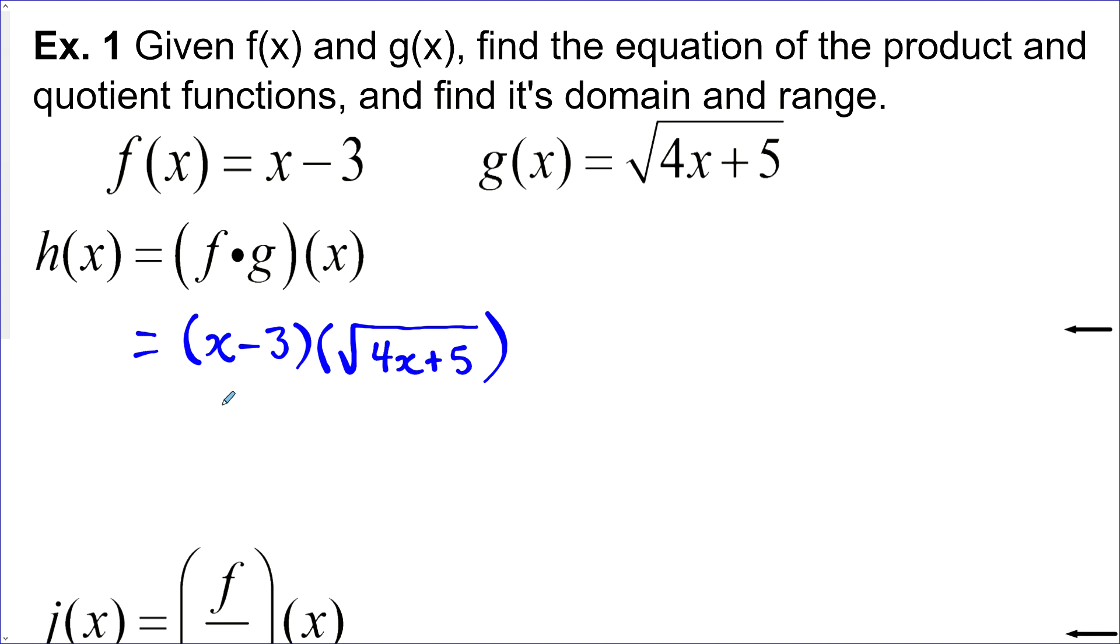Now we want to find the domain and range. So for the domain at least we look at this radical. We want our answer to be real and so we want this thing here, this radicand to be greater than or equal to zero. So do some algebra to solve for x. x is greater than or equal to negative 5 over 4. So that's our domain. Let's write it in interval notation: negative 5 over 4 to infinity.